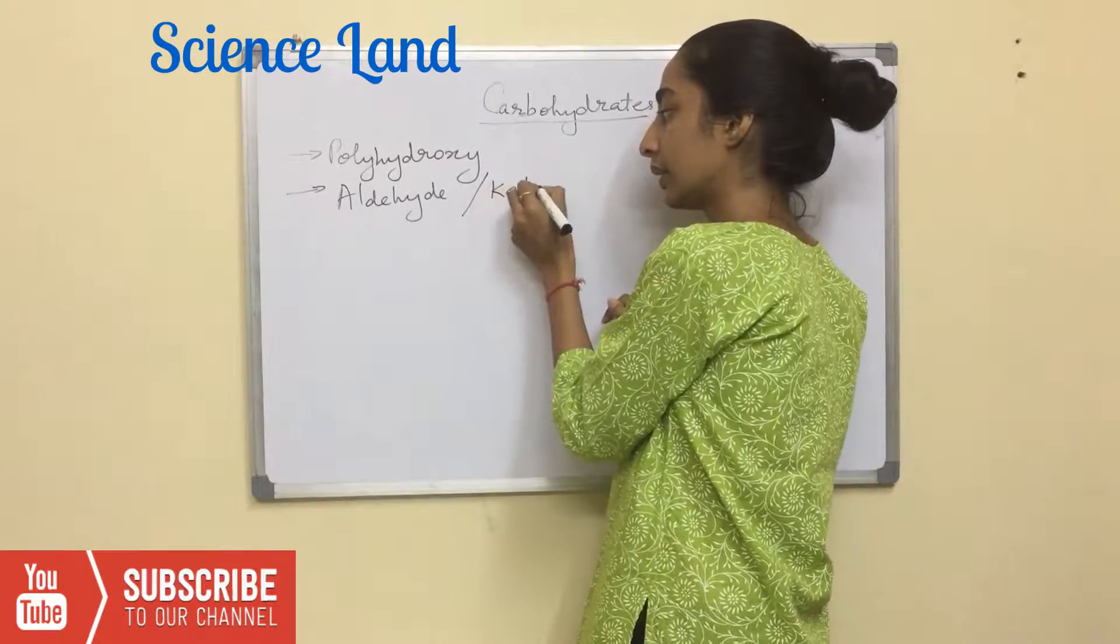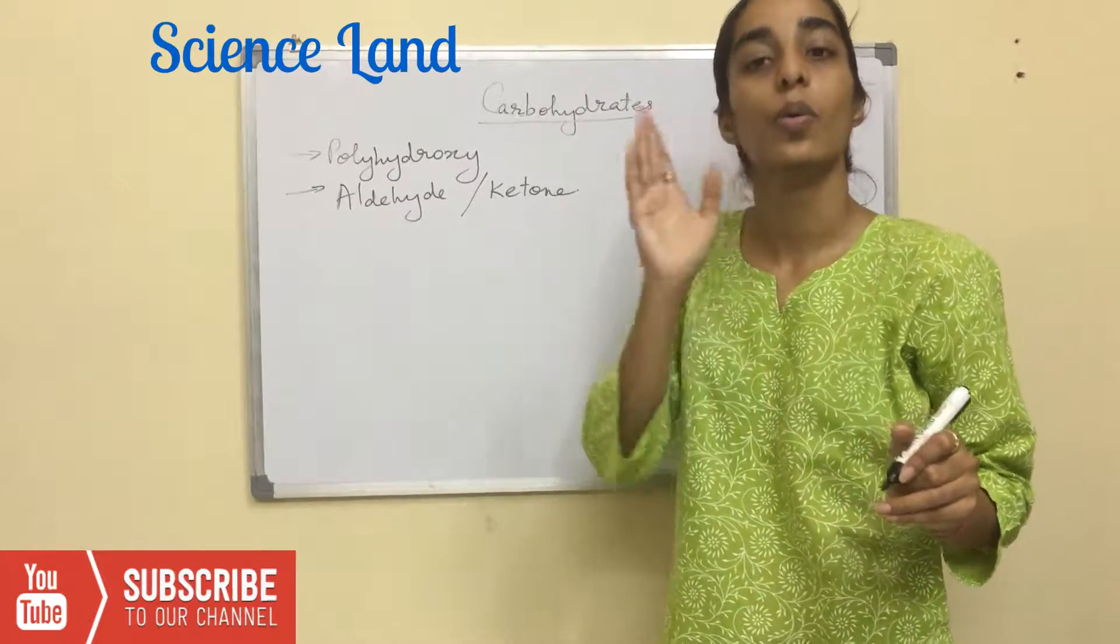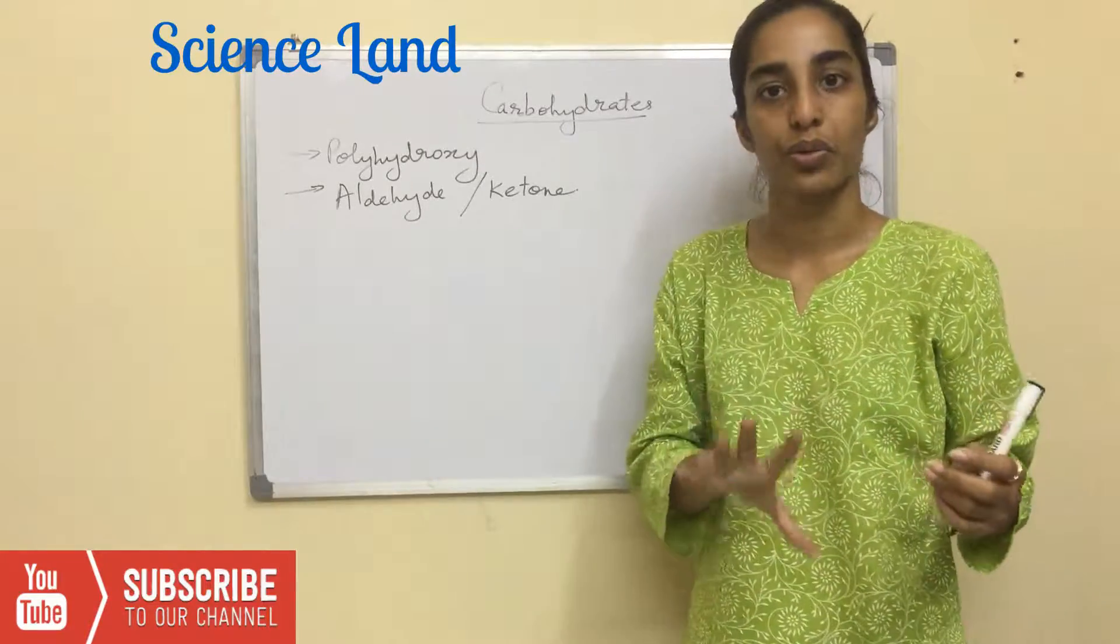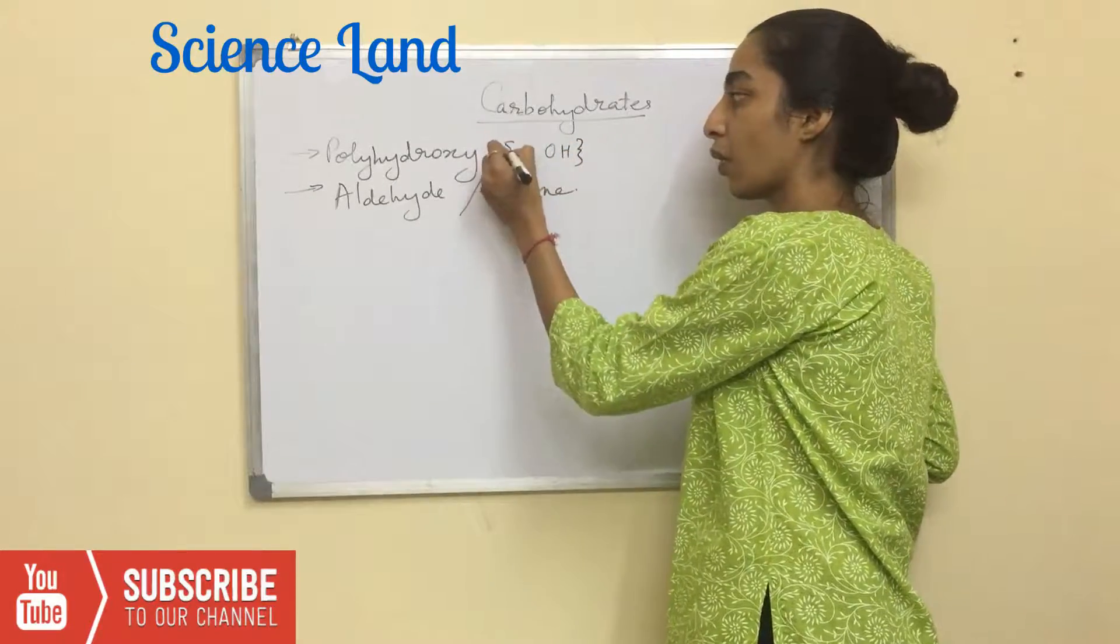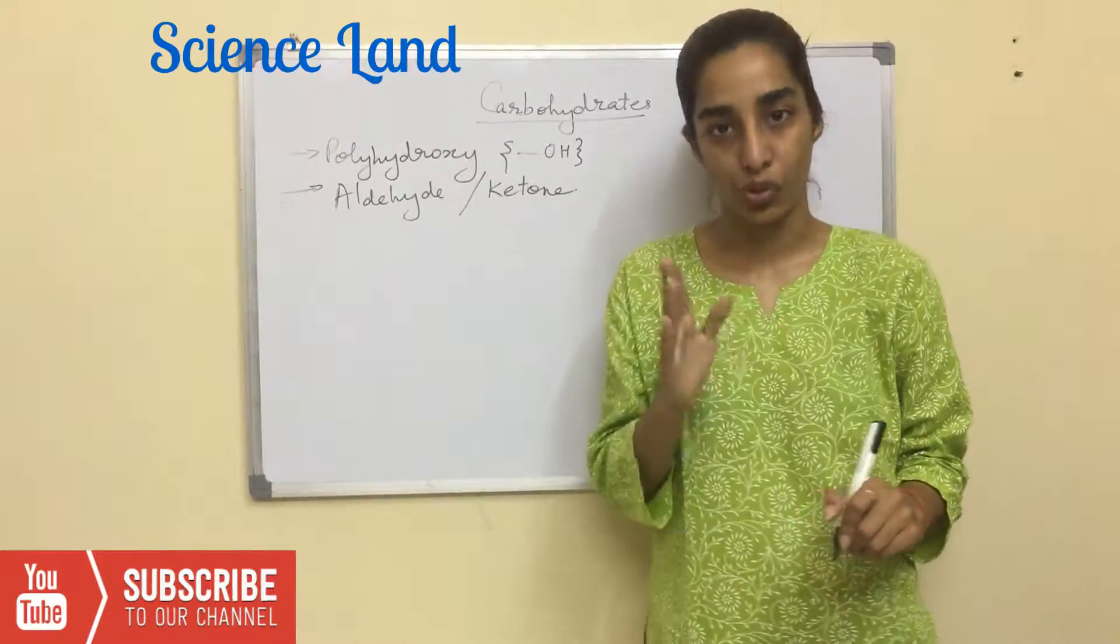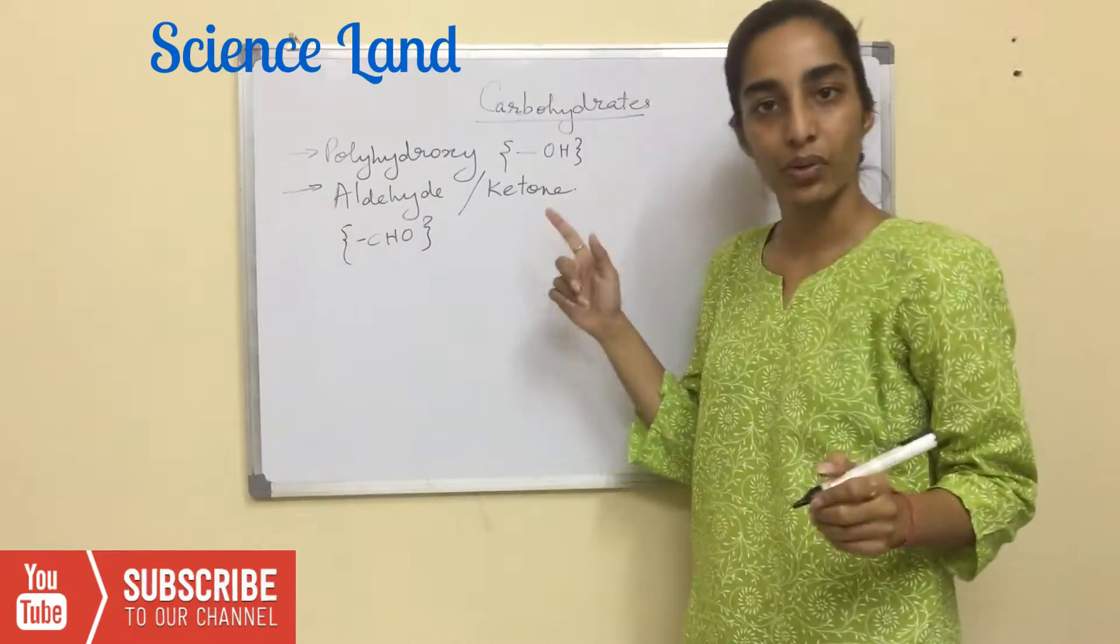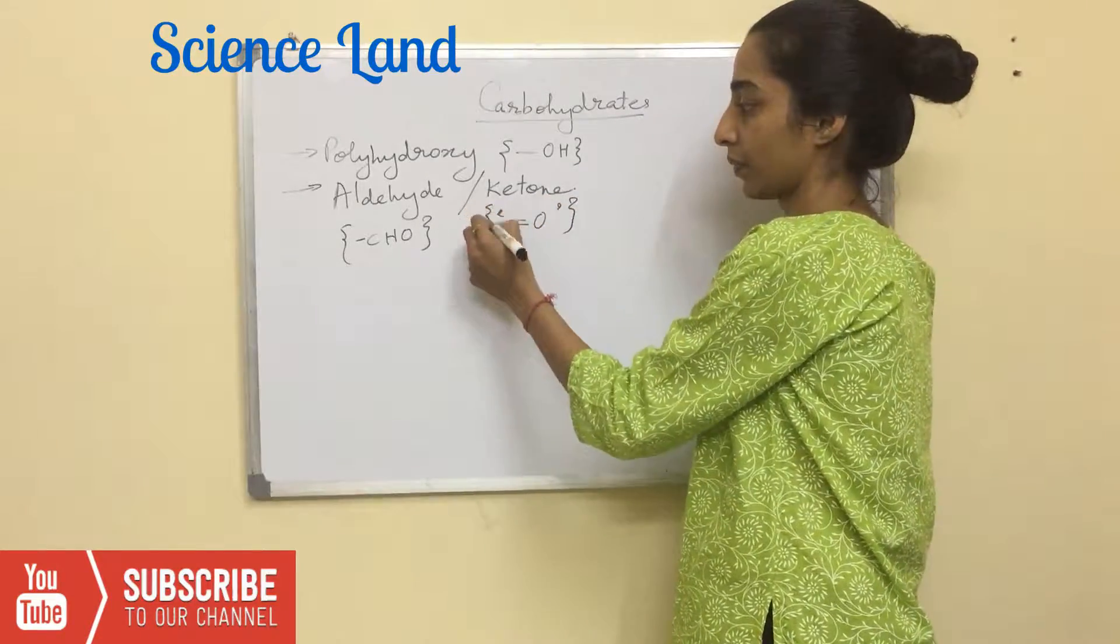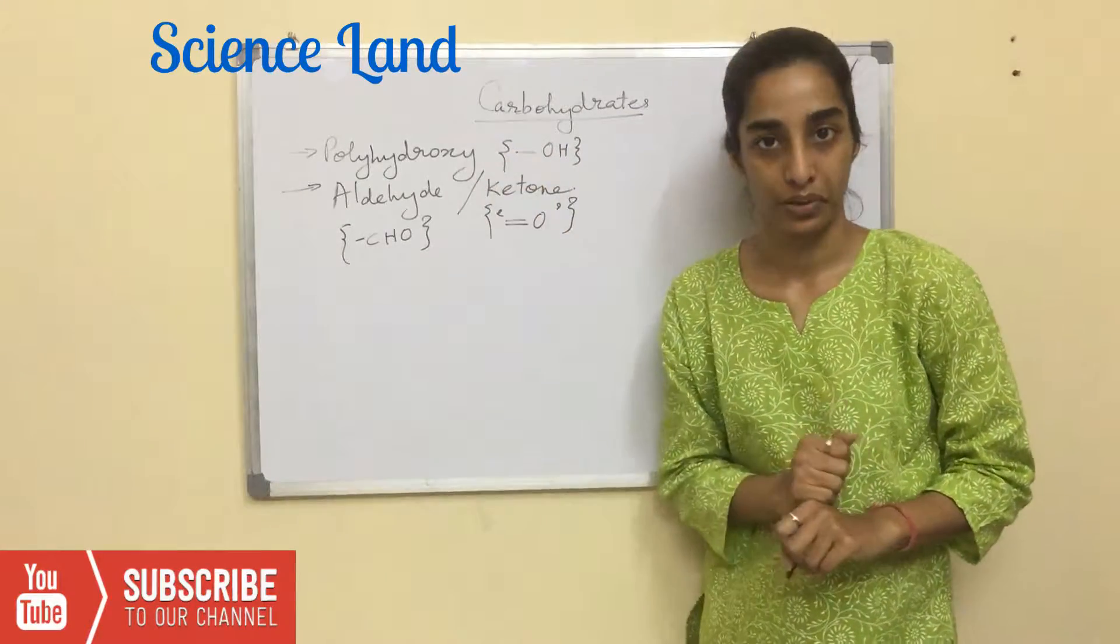What does polyhydroxy mean? The hydroxy group, as in the OH group. So at least more than two OH groups are present in a molecule of carbohydrate. Aldehyde group is the CHO group, or a ketone group which is double bond O.